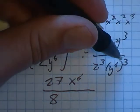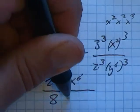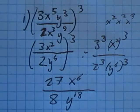2, 4, 8. y to the 6th cubed, 3 of these y to the 6ths, which leaves you 18 of those y to the 6ths.